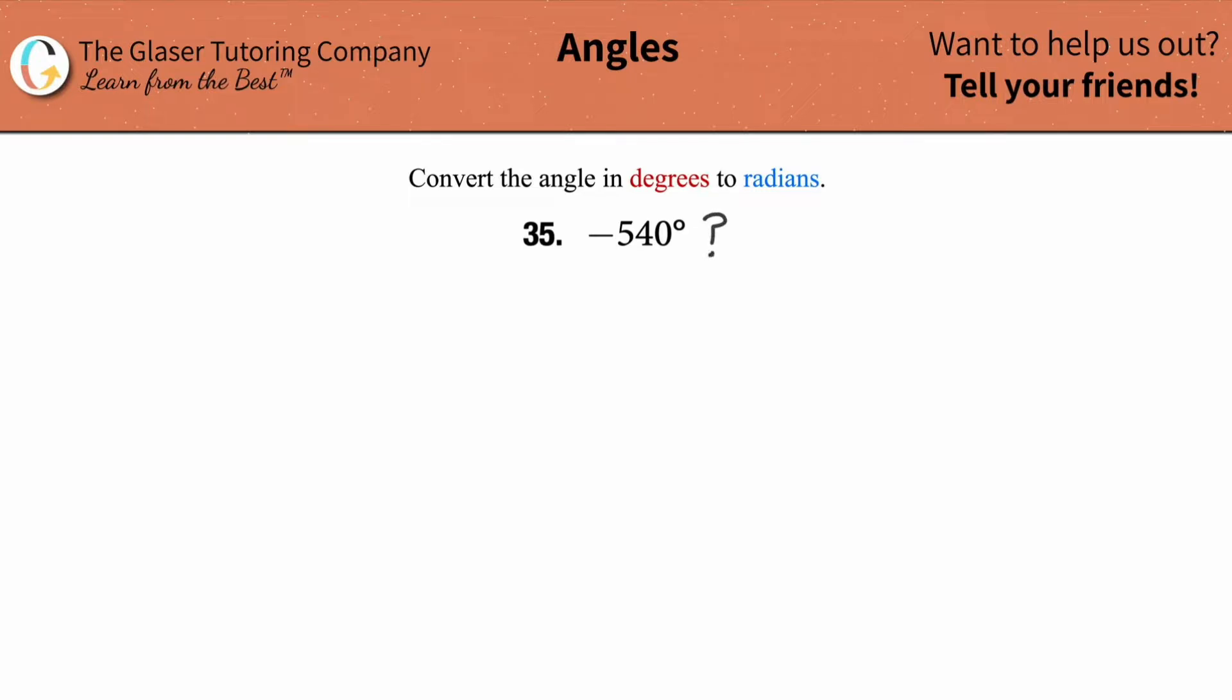So how do we convert negative 540 degrees into radians? Turns out that we can follow a very straightforward process.